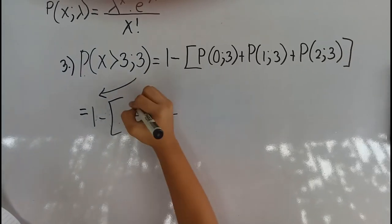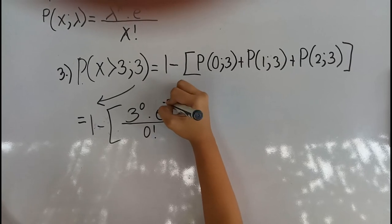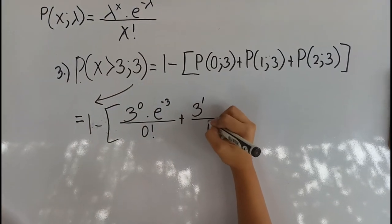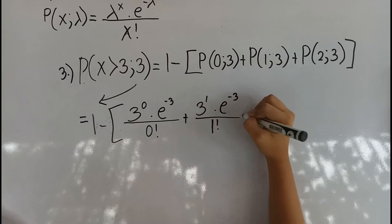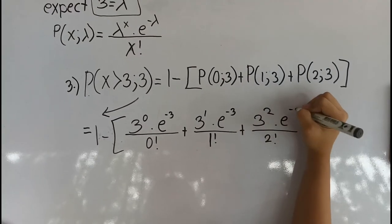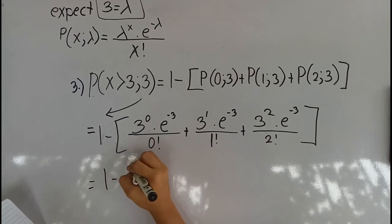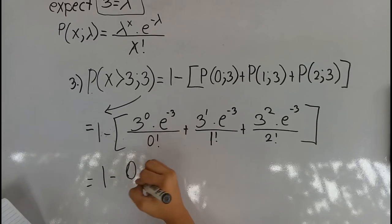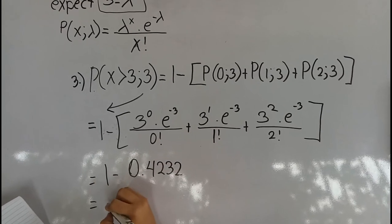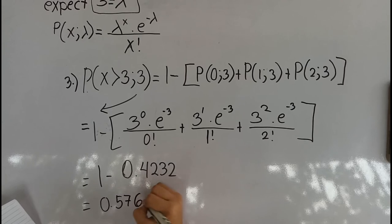The probability of x greater than or equal to 3, given lambda equals 3, is equal to 1 minus the quantity of P(0|3) plus P(1|3) plus P(2|3), which equals 1 minus 3 raised to 0 times e raised to negative 3 all over 0 factorial, plus 3 raised to 1 times e raised to negative 3 all over 1 factorial, plus 3 raised to 2 times e raised to negative 3 all over 2 factorial, is equal to 1 minus 0.4232, approximately equal to 0.5768.